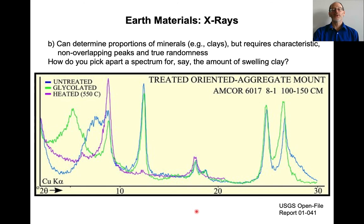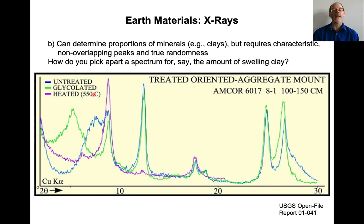One thing people use x-ray diffraction for is to determine proportions of minerals — a lot of times it's clays. You have to have very well standardized spectra. Here is an x-ray spectrum of clays using a copper K-alpha x-ray source, measured at 2-theta angles from 3.5 to 30 degrees. You can see all these different peaks — pretty broad peaks. This is just an untreated specimen. This one has been glycolated — you add ethylene glycol to it, and for swelling clays they will spread apart. And then if you heat it, you get a different spectrum.